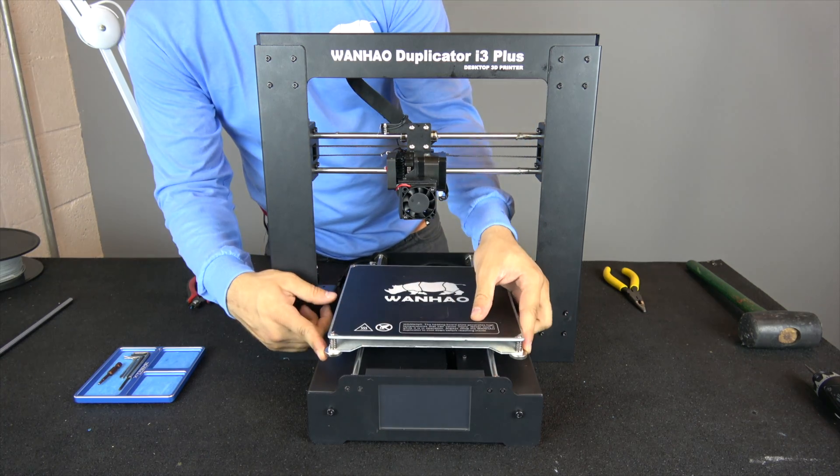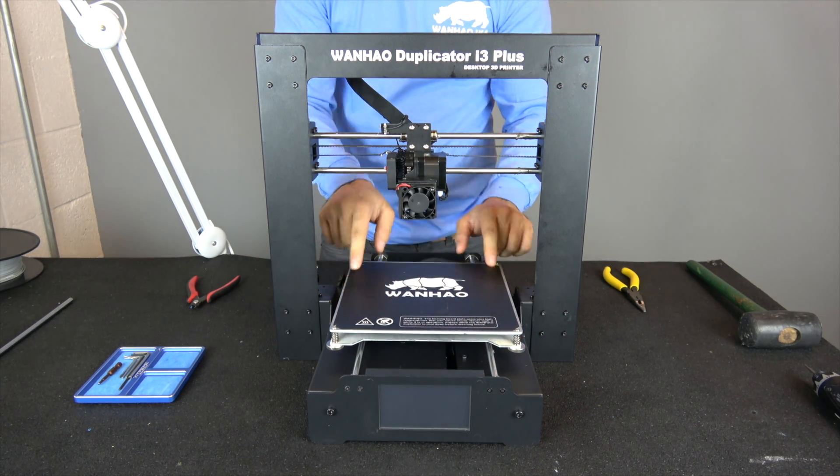Now remove the four thumb screws located at the corners of your bed plate followed by the springs above them.